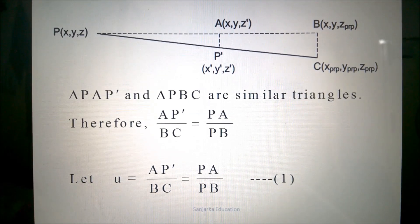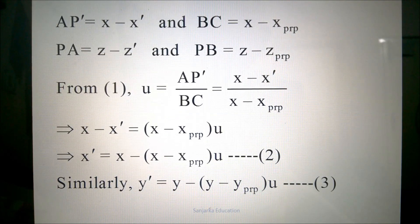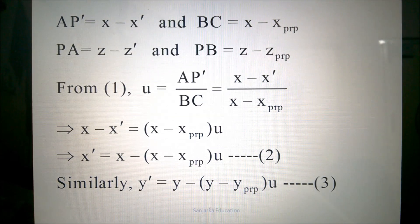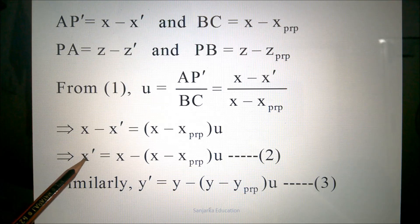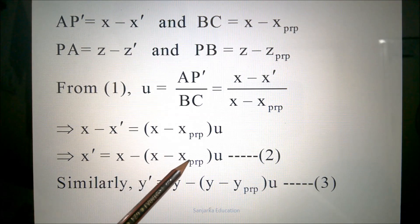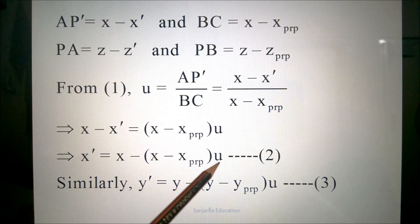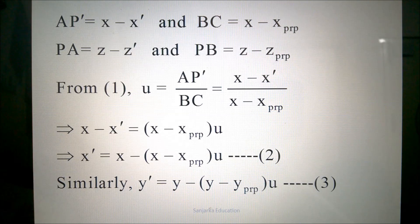The relationship already mentioned is shown in equation number one, and that will be replaced by the coordinates shown here. After replacing and substituting the coordinates, we arrive at a relationship for the perspective projection of the X coordinate. This is the original X coordinate, and this is the coordinate corresponding to the perspective reference point. U was already defined, and from that we derive this relationship.